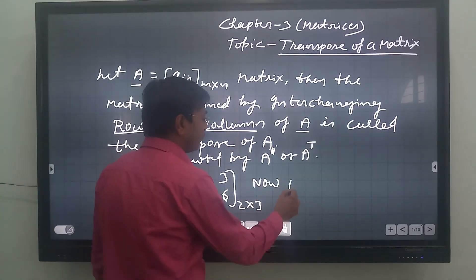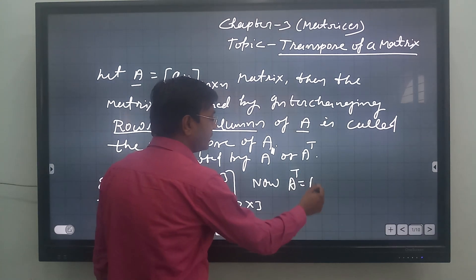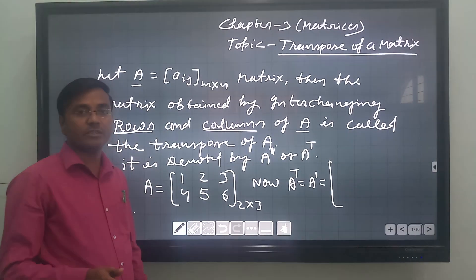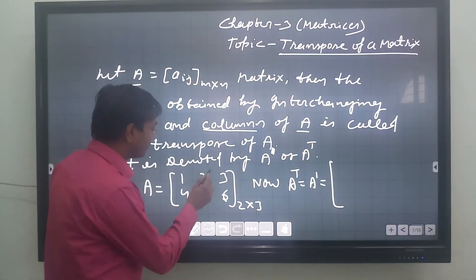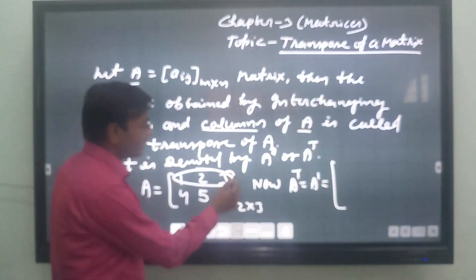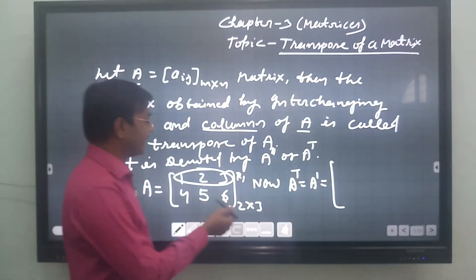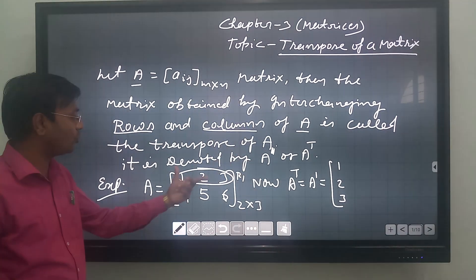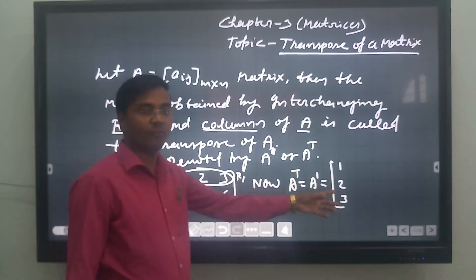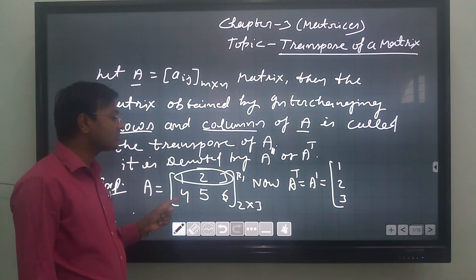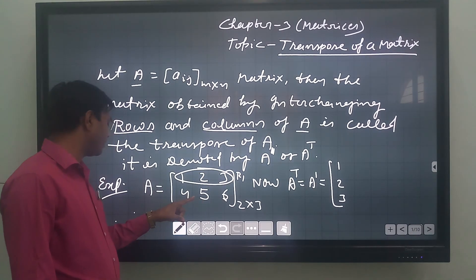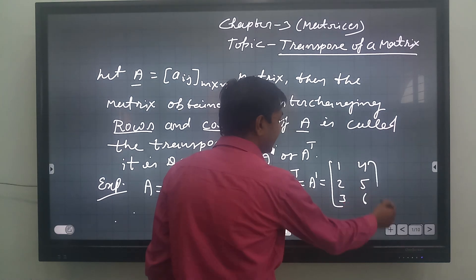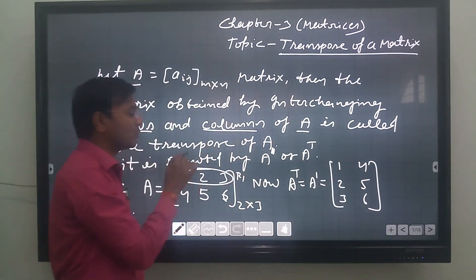Now let us find its transpose, A dash. According to the definition, we have to change rows into columns. The first row 1, 2, 3 is converted into the first column. Similarly, the second row 4, 5, 6 is converted into the second column. So now this matrix is the transpose of the given matrix.